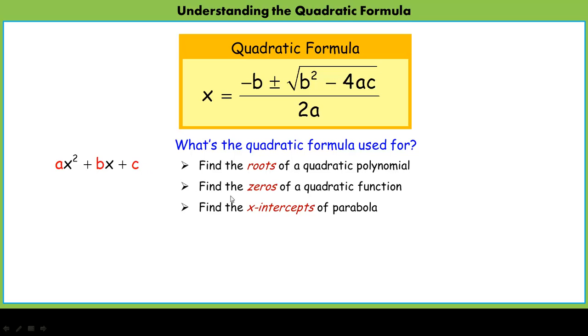Finding the zeros of a quadratic function is very related. A quadratic function is saying that this polynomial is a function. I have my inputs of x, and given any x, what would be the output of the function? We want to know what values of x, or what inputs, would give me an output of zero. That's considered the zeros of a quadratic function.